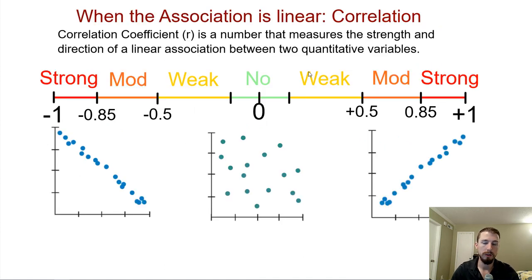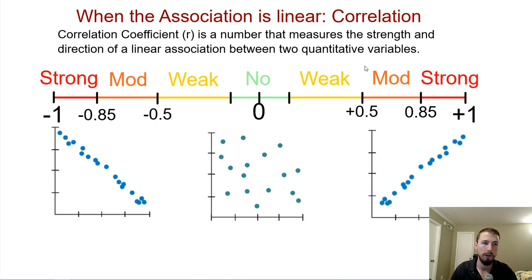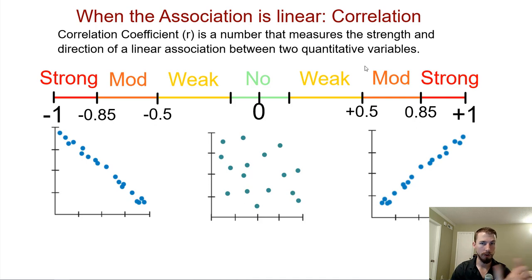When the association is linear, there's a special term we can use: correlation. We can still describe the strength of curved or exponential associations as strong, moderate, or weak, but when it is specifically linear, we use the correlation coefficient, lowercase r. The correlation coefficient r measures the strength and direction of a linear association — keyword linear — between two quantitative variables. We can't graph eye color and height, because eye color is categorical. We need quantitative data, like in a histogram, where it's continuous.